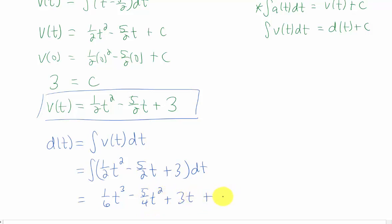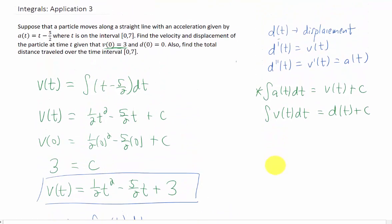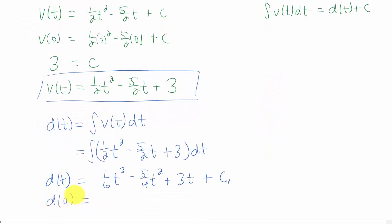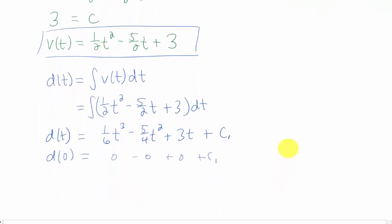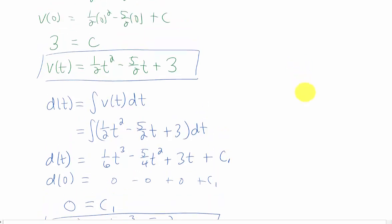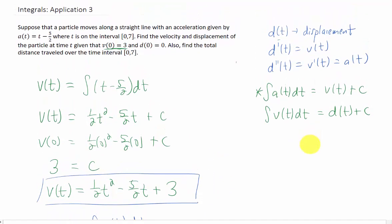I'll just call it c1, and now we're given an initial condition for our displacement in the problem, d(0) equals 0. That tells me that we should be plugging in t equals 0 into this displacement function. The function itself gives us a result of c1, but we know that that initial displacement needs to be 0, telling us that c1 is 0, and we now have a function for the displacement of our object. Now we're doing pretty well here. I think that we've answered the first two parts of this question.